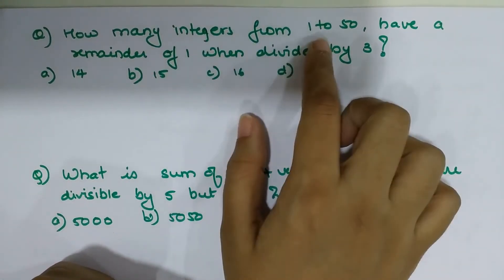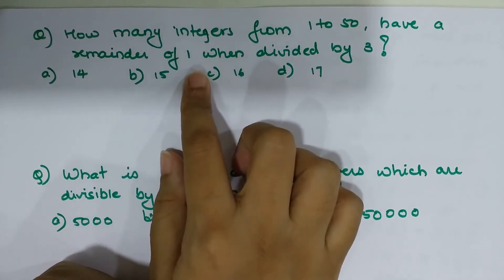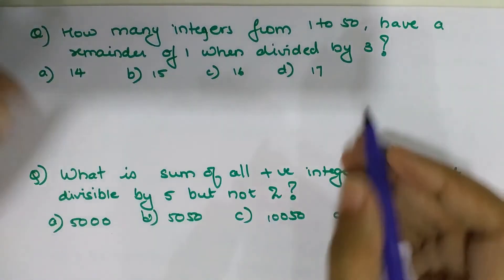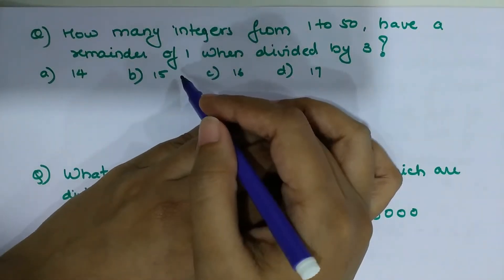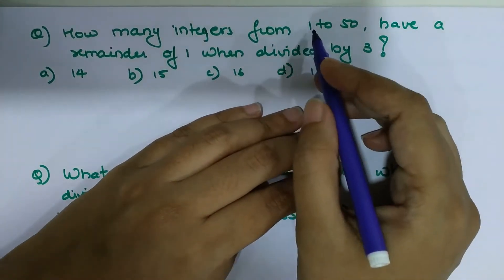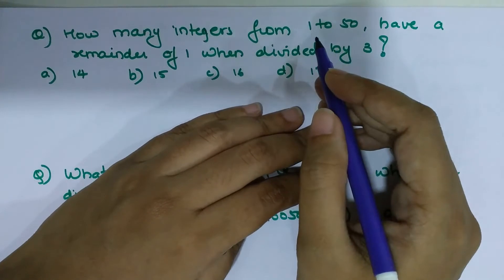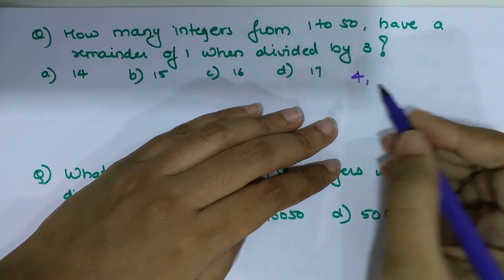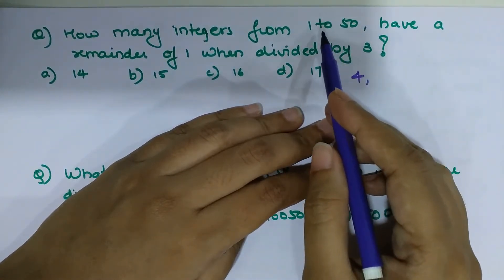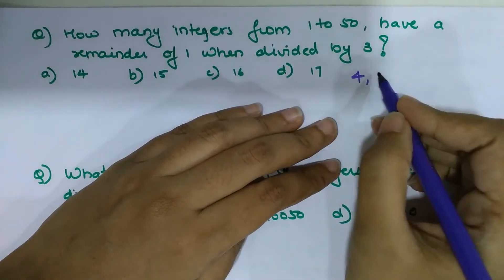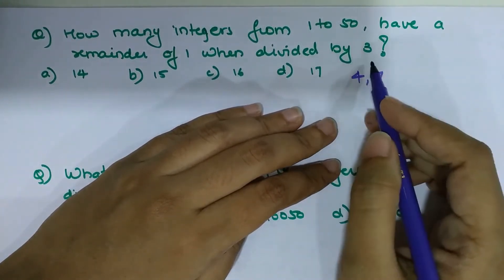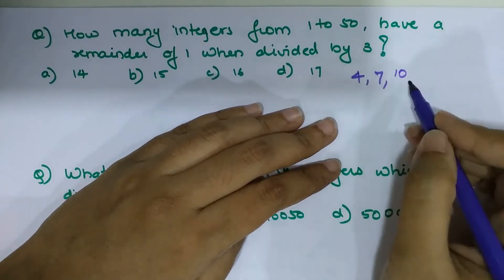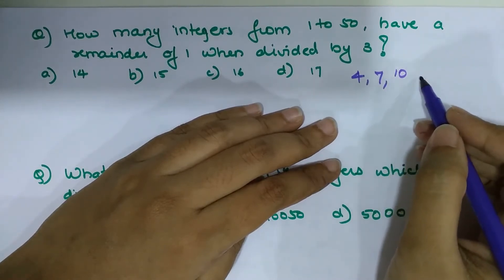Question 2: How many integers from 1 to 50 have a remainder of 1 when divided by 3? We write down the numbers that give remainder 1 when divided by 3. Starting from 1: 1 and 2 are not divisible by 3, 3 is divisible with remainder 0, and 4 divided by 3 gives remainder 1. The next such number is 7, then 10, and so on.